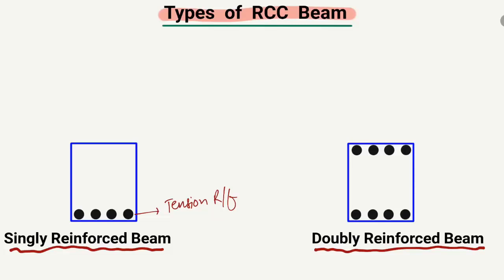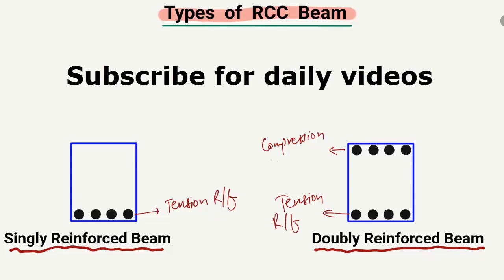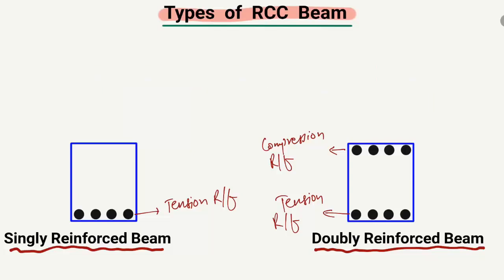In the case of the doubly reinforced beam, we have tension reinforcement and also compression reinforcement. It is called the doubly reinforced beam because it is reinforced in both compression and tension zones.